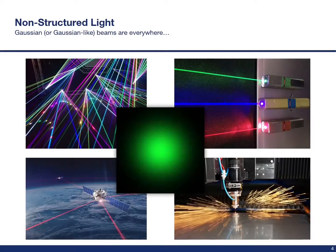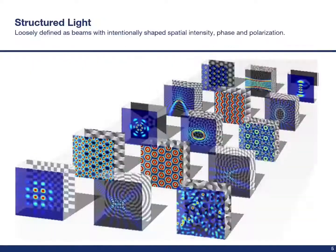Non-structured laser beams are everywhere. We know these as the Gaussian or almost Gaussian beams, which are produced by a laser pointer, as I would have been using had this talk been in person. These beams are also used for many other applications, such as optical communications, light shows, and even industrial applications like laser cutting. Structured light, on the other hand, can be loosely defined as beams that have an intentionally designed intensity, phase, and even polarization structure. On this slide are a few examples of structured light. The colorful intensities of various beams are shown with grayscale spatial phases behind them. Where the phase jumps abruptly from one value to another, such as the checkerboard pattern on the bottom left, the intensity tends to be lower or even zero. There is an intrinsic relationship between the intensity and phase of a laser beam.